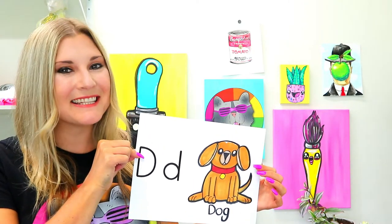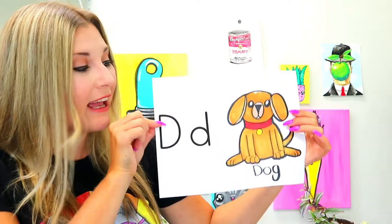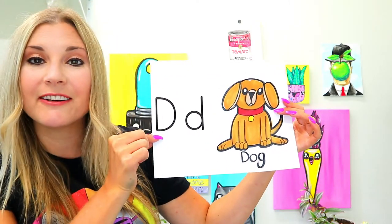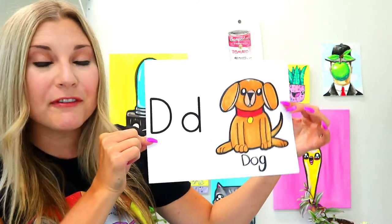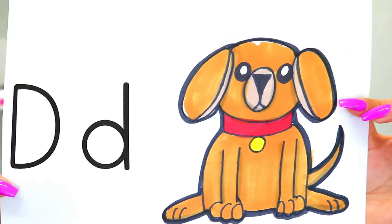I'm Mizzartastic and in this video art tutorial we're going to be drawing a lovely little dog. Dog starts with the letter D, so grab your favorite art making mediums and let's make some art.